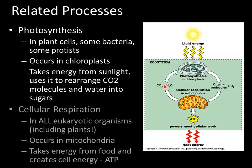Inside the chloroplasts, with the help of the sun's energy, the plant can rearrange the carbon dioxide molecules into organic molecules like sugar, and then the plant gives off oxygen. So in photosynthesis, carbon dioxide and water come into the plant. The sun's energy comes in, and in the chloroplasts, with that sun's energy, the plant is able to turn the carbon dioxide molecules into organic molecules like sugars and release oxygen.